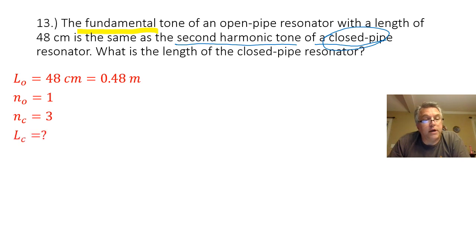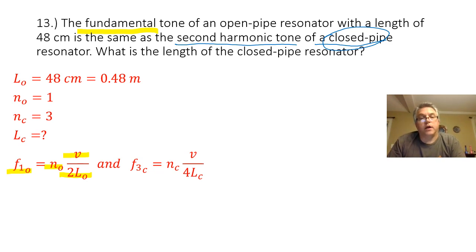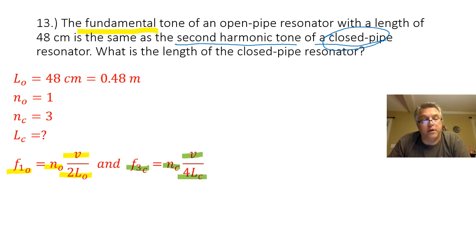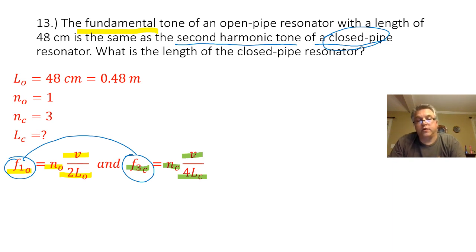We are looking for the length of the closed pipe. The frequency for the open pipe equals the harmonic number times velocity divided by 2 times the length of the open pipe. For the closed pipe, the third harmonic equals the harmonic number times velocity divided by 4 times the length of the closed pipe. These are the two formulas you really need to know for the test. Since the fundamental frequency of the open pipe equals the third harmonic of the closed pipe, I can set these two expressions equal to each other.